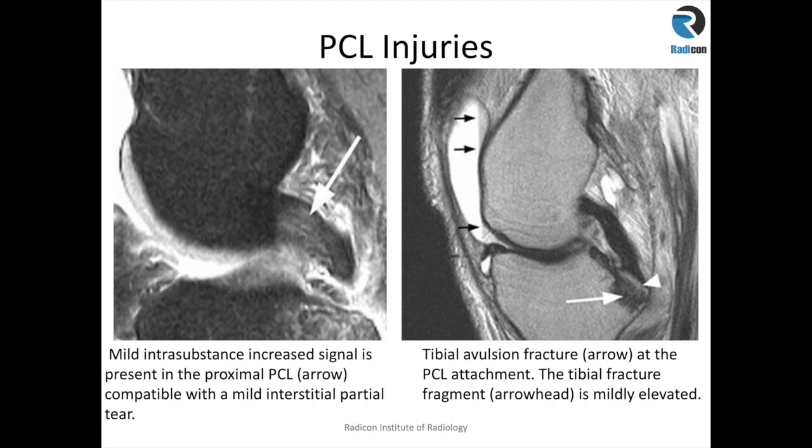This is an example of a tibial avulsion of the PCL. You can see there is a small bony component which appears to have avulsed, and that signal change indicates the damaged PCL where it inserts onto the tibia.